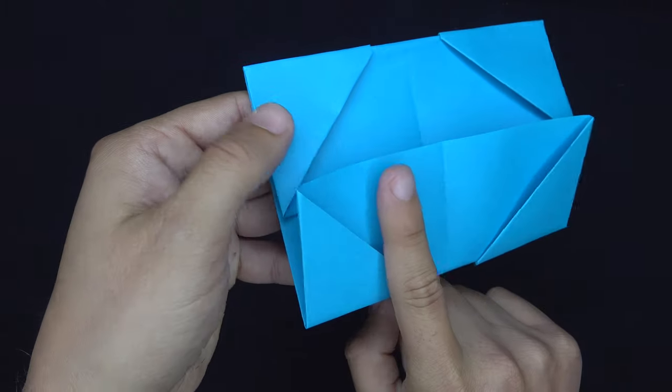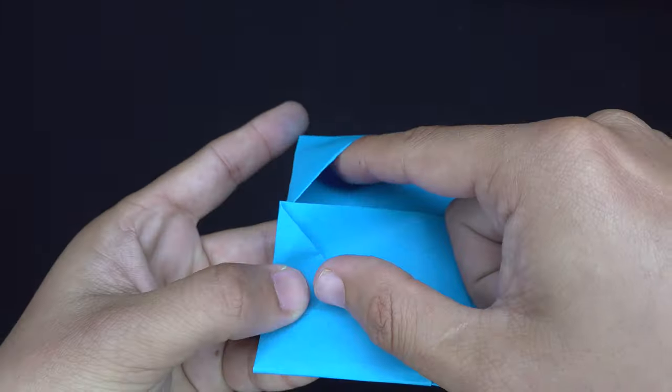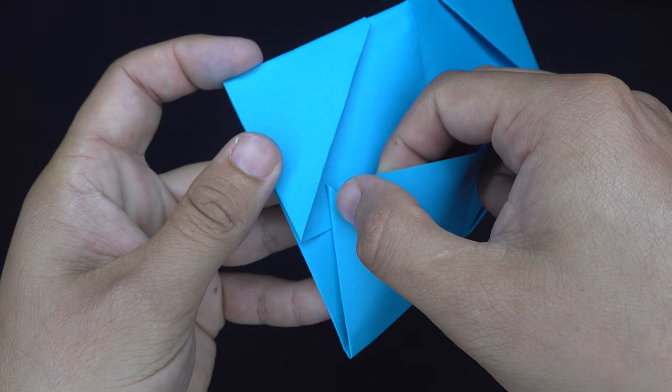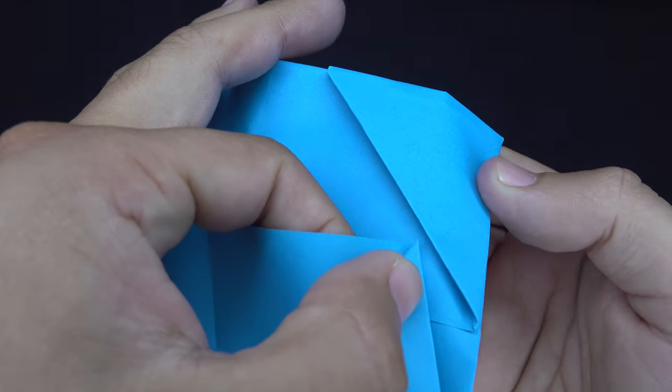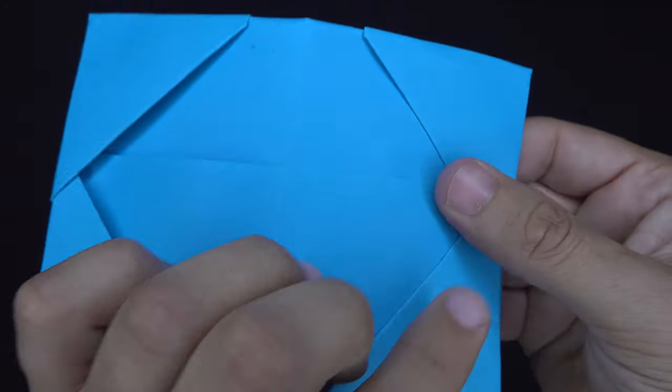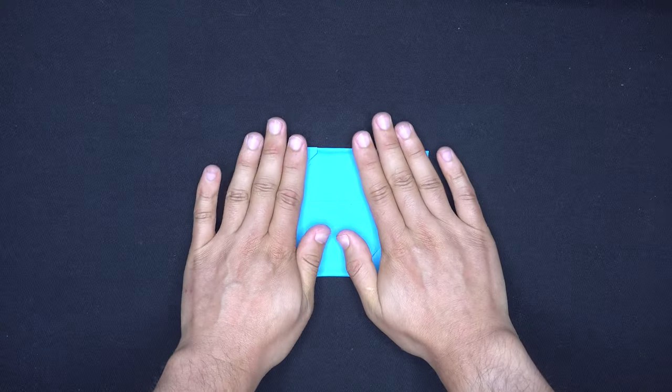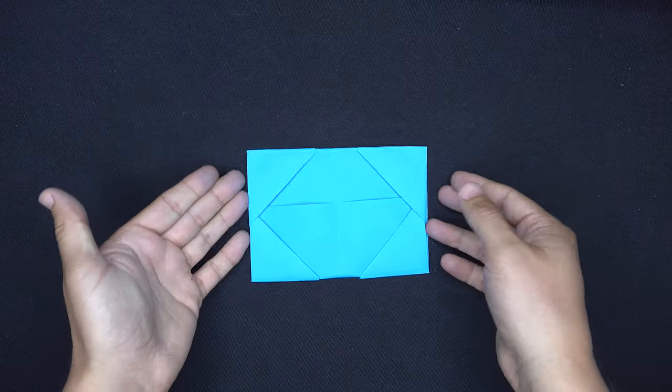Then you could take the bottom edge and you'll see we're going to tuck it underneath this little triangular pocket. Slide it underneath the pocket and do the same on the other side, just like this so it's underneath. Now we could flatten everything out and we can once again pick it up.